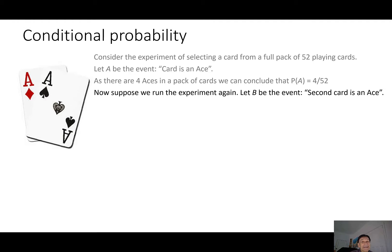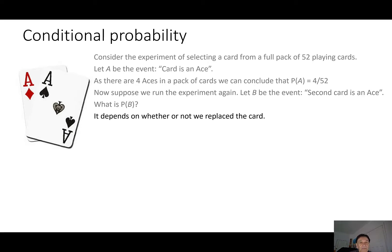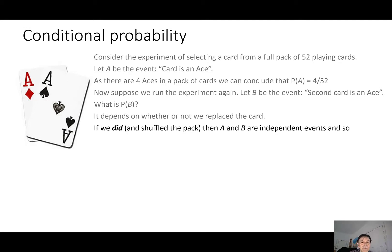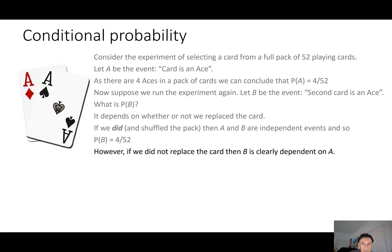Now suppose we run the experiment again and let B be the event that the second card is an ace. We're selecting a card from a full pack twice and observing whether we get two aces. What's the probability of B? It depends on whether or not we replaced the first card. If we did and shuffled the pack, then A and B are independent events and the probability of B is the same as the probability of A: 4 over 52.